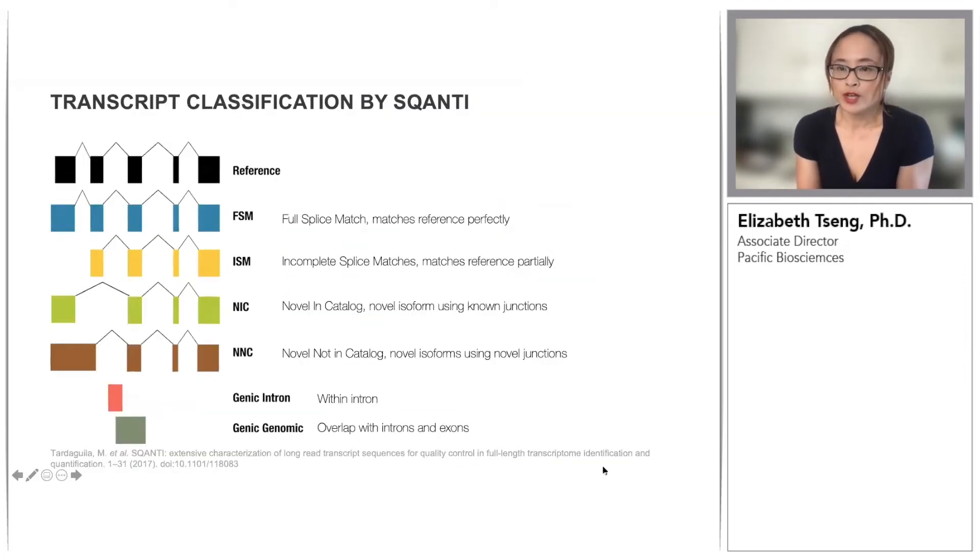Given a reference transcript, here shown in black, if an Iso-Seq transcript matches the reference by every splice junction perfectly, it is considered a full splice match. If it's a partial but perfect match to a reference but missing one or more of the five-prime or three-prime exons, it is an incomplete splice match. There are two classifications for novel isoforms. Novel in catalog are novel isoforms using a combination of known donor and acceptor sites. Novel not in catalog are novel isoforms that use at least one novel donor or acceptor site.